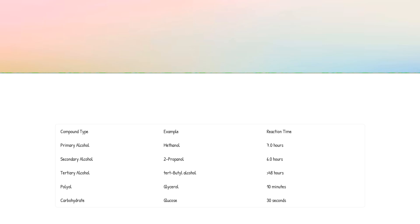The time required for Ce4+ complexes to be reduced to colorless Ce3+ varies significantly depending on the type of alcohol. Primary alcohols, like methanol, react in 7 hours, while 1-decanol takes 12 hours. Secondary alcohols, such as 2-propanol, react in 6 hours. Tertiary alcohols, like tert-butyl alcohol, take over 48 hours. Diols, triols, and polyols generally react faster, with glycerol taking 10 minutes. Carbohydrates react quickly, with glucose taking only 30 seconds.